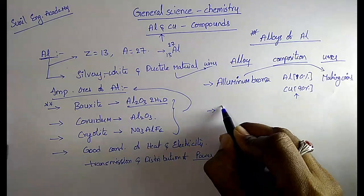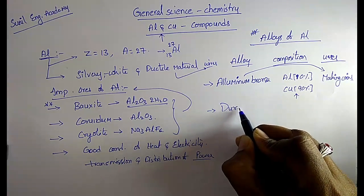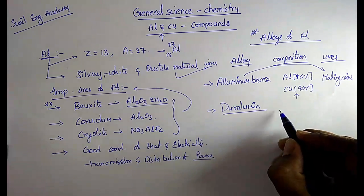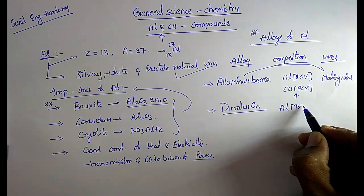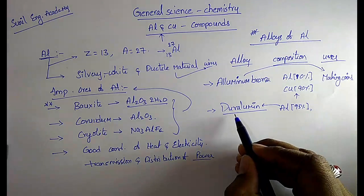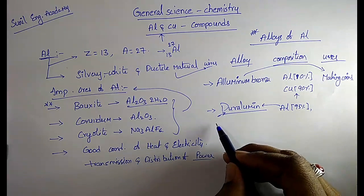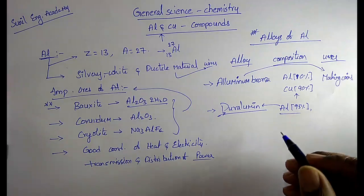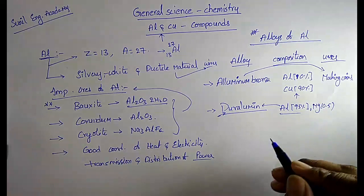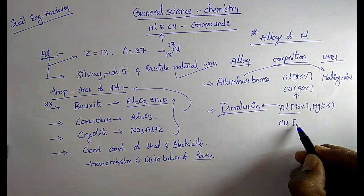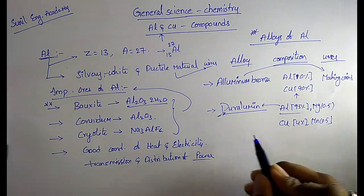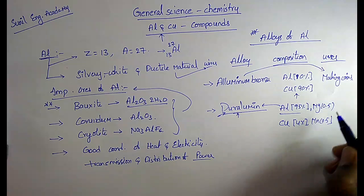Aluminium bronze is used for making coins. The next important alloy is duralumin. In duralumin, the aluminium percentage is 95%, with magnesium 0.5%, copper 4%, and manganese 0.5%.